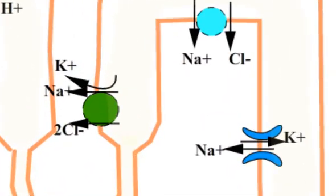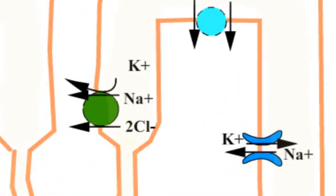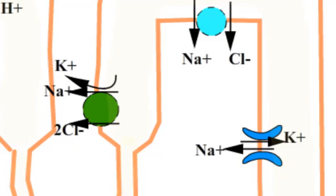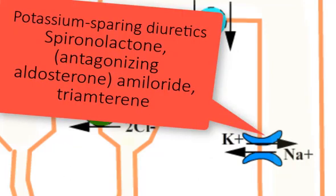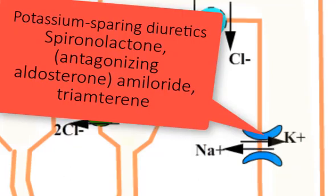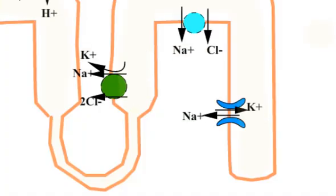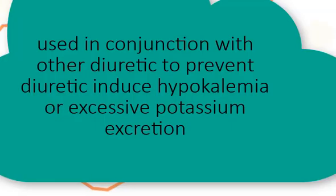The collecting duct is the site of action of potassium-sparing diuretics. In the collecting duct, reabsorption of sodium is coupled with potassium and hydrogen excretion. Spironolactone reduces sodium reabsorption by antagonizing aldosterone, inhibiting aldosterone-induced proteins which promote sodium reabsorption. The other potassium-sparing diuretics, amiloride and triamterene, cause blocking of sodium channels. The potassium-sparing diuretics are used in conjunction with other diuretics to prevent diuretic-induced hypokalemia or excessive potassium excretion.